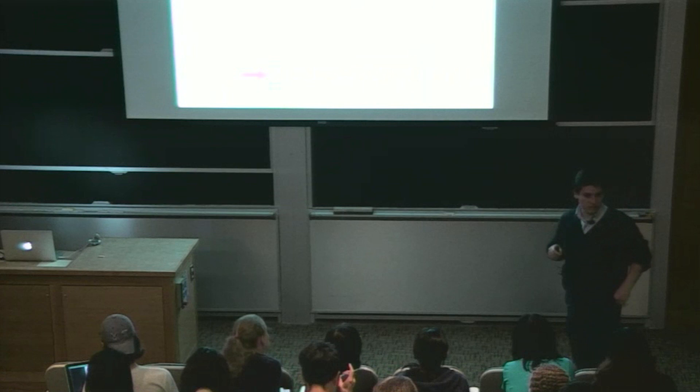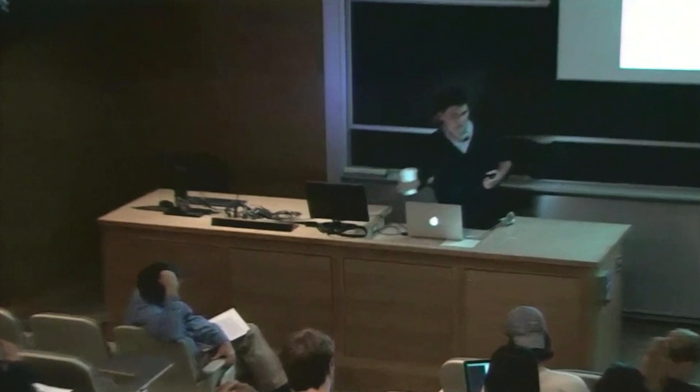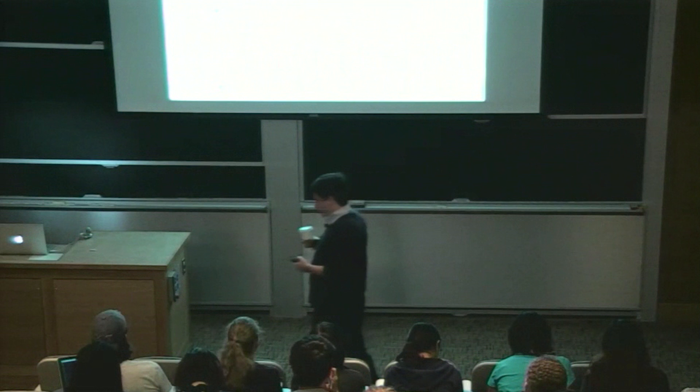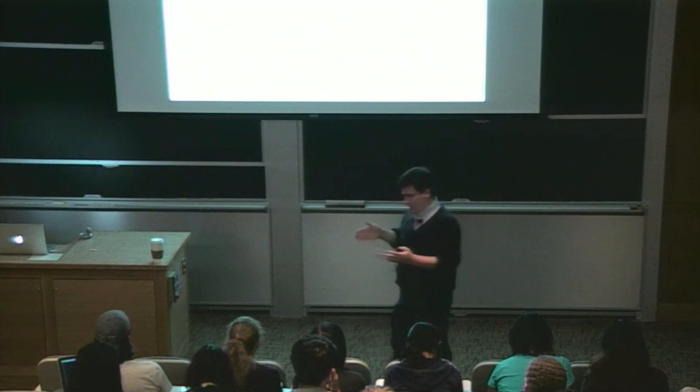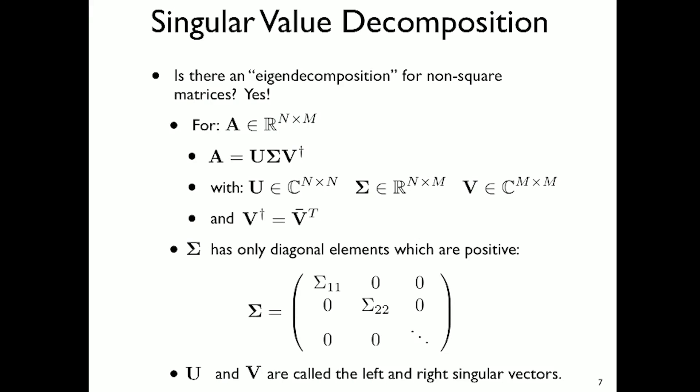We talked about eigendecomposition last time — associated with a square matrix was a set of eigenvalues, stretches, and corresponding eigenvectors. These were special solutions based on a square matrix. But what if the matrix isn't square? What if A is in the space of real matrices that are n by m, where n and m aren't the same? There's an equivalent decomposition called the singular value decomposition — it's like an eigendecomposition for non-square matrices.